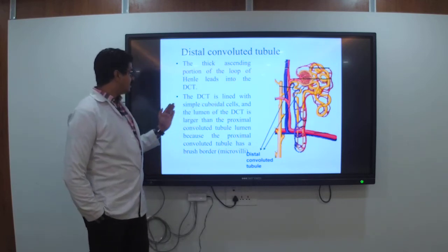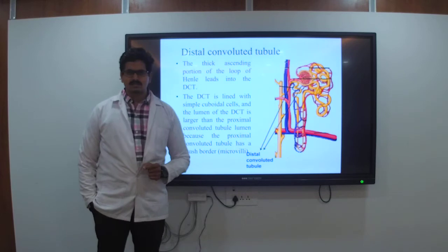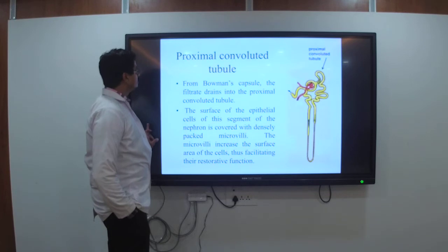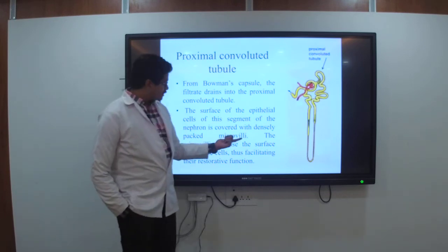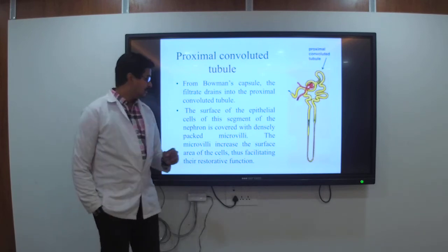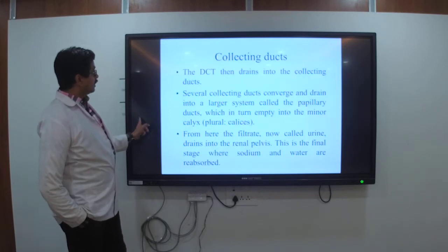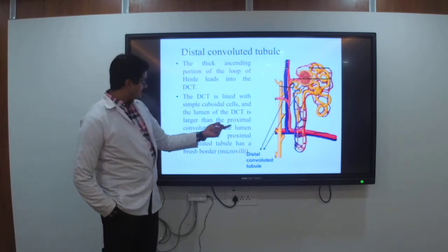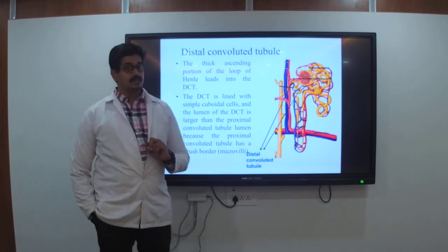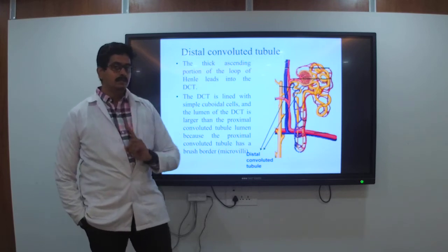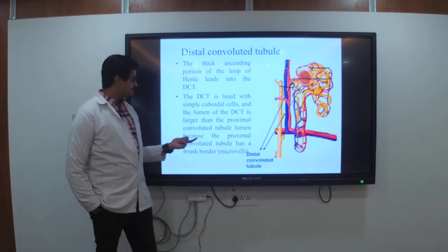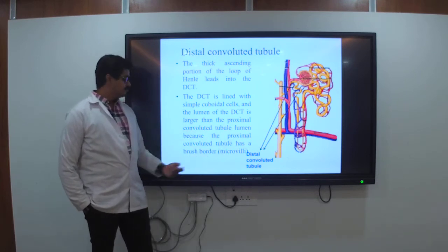The distal convoluted tubule is lined with simple cuboidal cells. These cells consist of microvilli, which facilitate reabsorption. The DCT is thicker than the PCT — DCTs are thicker than PCTs. The DCT lumen appears larger than the proximal convoluted tubule because the proximal convoluted tubule has a brush border of microvilli.